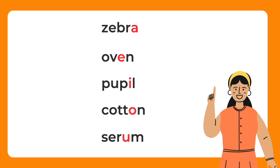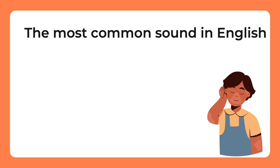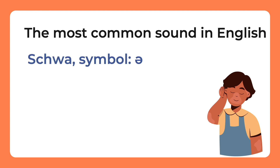Here's the answer: the 'uh' sound — and we can find it in all of these vowels. Well, if you didn't get it right, don't worry. Most people don't even know this sound exists. However, believe it or not, it is the most common sound in the English language. It has its own very special name and symbol. It's called schwa, and this sort of upside-down 'e' is the symbol linguists use to represent it.